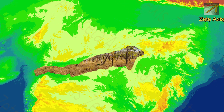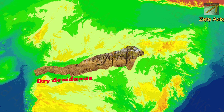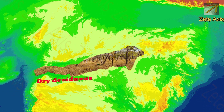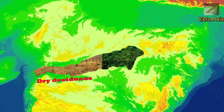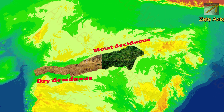The Satpuras generally have deciduous forests, but the eastern part of Satpura receives more rainfall due to convergence of the Arabian Sea monsoon branch and the Bay of Bengal monsoon branch over the Chhota Nagpur Plateau. Therefore, the western part of Satpura hills has dry deciduous climate due to less rainfall, while the eastern part of Satpura hills has moist deciduous climate.